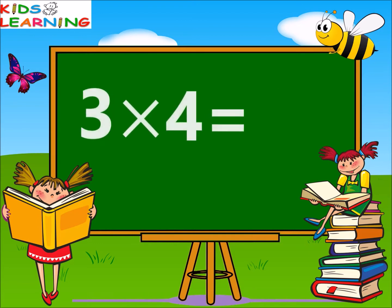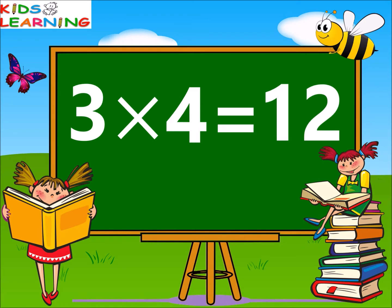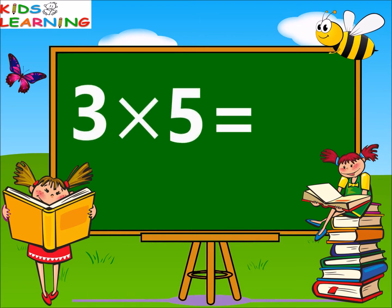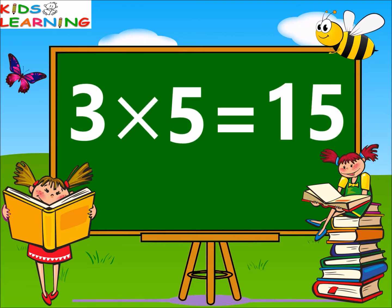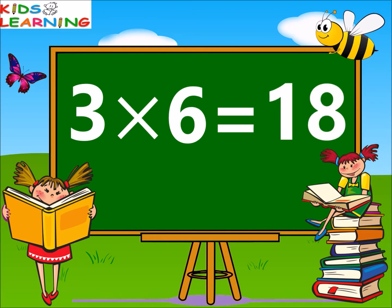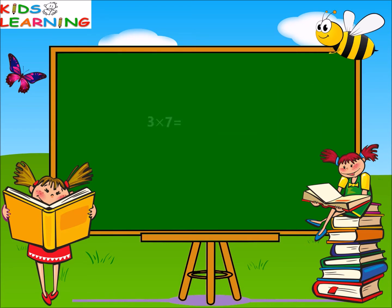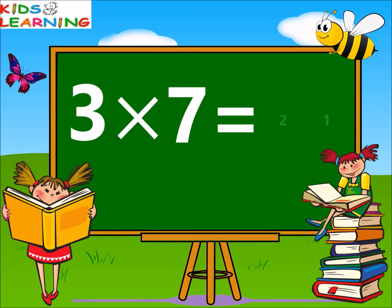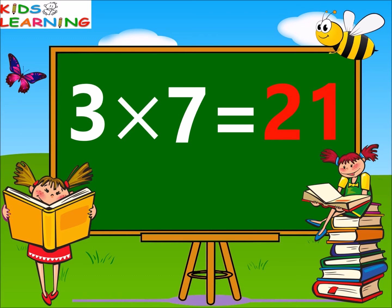Three fours are twelve. Three fives are fifteen. Three sixes are eighteen. Three sevens are twenty-one.